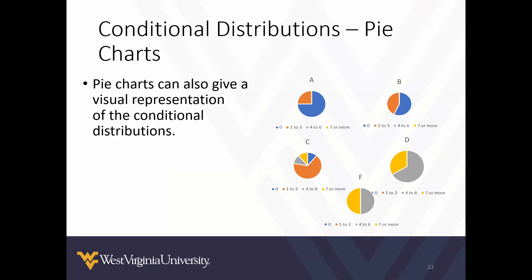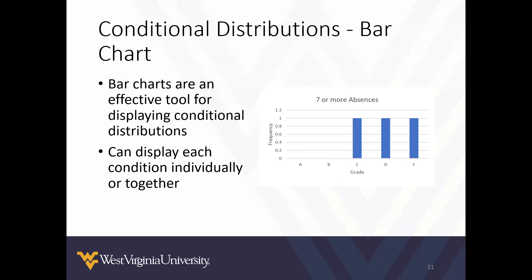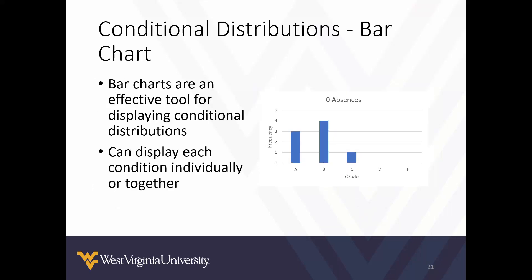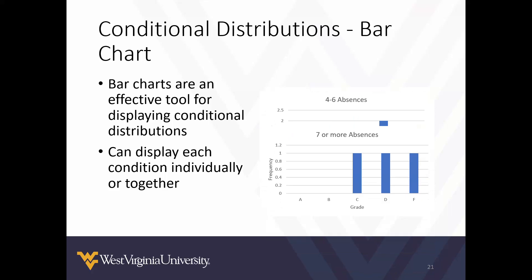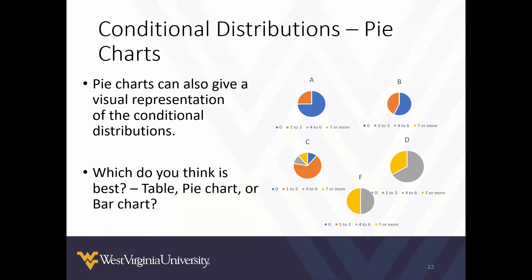Another way to show conditional distributions is with pie charts. Just as we could show multiple bar charts for each absence category, we can do something similar with pie charts, where each pie chart represents a letter grade and each slice represents the corresponding number of absences.